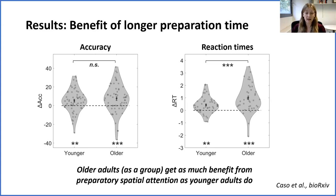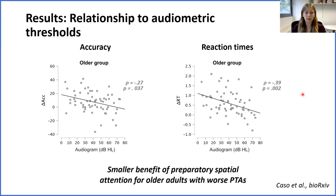Next we examined whether individual differences in the magnitude of the benefit within each group relate to participants' audiometric thresholds. The plots show the area between the curves on the y-axis and the pure tone average audiogram at 4 to 8 kilohertz on the x-axis. For the older group, we found that the benefit to accuracy and the benefit to reaction times were significantly smaller for people who had worse audiometric thresholds. This demonstrates that even though preparatory spatial attention is preserved in older adults with normal hearing, it is impaired by age-related hearing loss — somewhat similar to the results we found in children with early onset hearing loss. Together, our results suggest that regardless of the age at which someone acquires hearing loss, it weakens their ability to direct preparatory spatial attention to speech when competing speech is present.